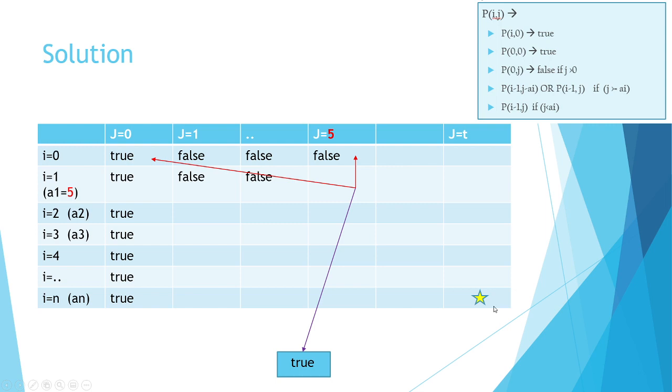This would be either true or false, and that will tell you whether there is a subset that exists within this set of numbers that'll make t or not. Very similar to the coin making problem, change making problem, or you can say backpack problem—very similar. These are all variations, different formulations of the same exact problem.